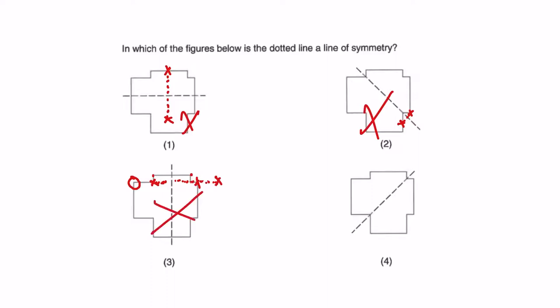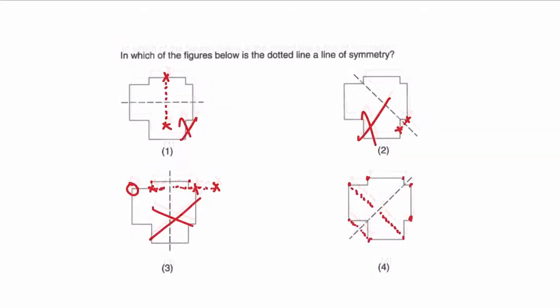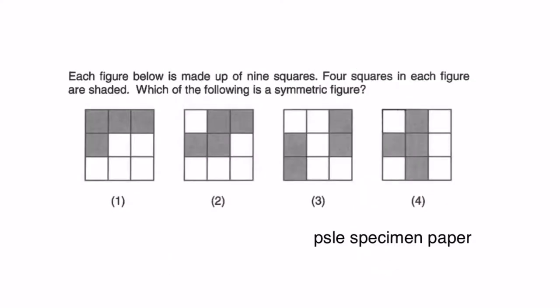That leads us to our last answer. This point matches this point. This and this, this and this - it matches. You can see it's equidistant from the line of symmetry. That is one way you can identify the line of symmetry and determine if the diagram is symmetric. The answer is number four.